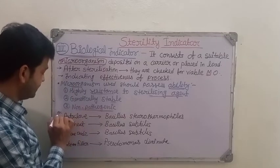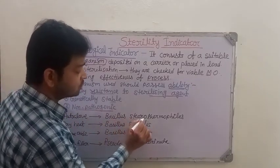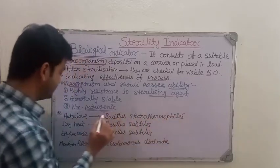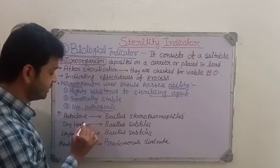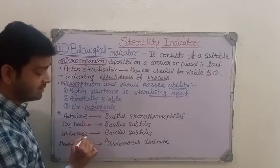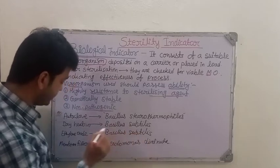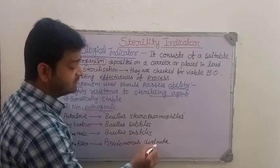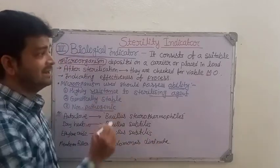For example, in autoclave sterilization, we use Bacillus stearothermophilus. In dry heat sterilization at 160 degrees centigrade, we use Bacillus subtilis. In ethylene oxide sterilization, we also use Bacillus subtilis. And for membrane filtration, Pseudomonas diminuta can be used as a biological indicator.